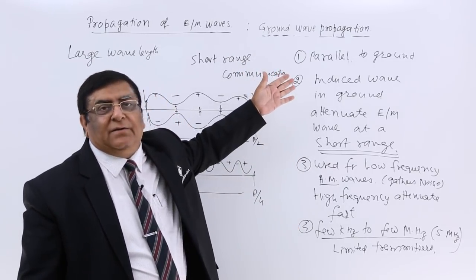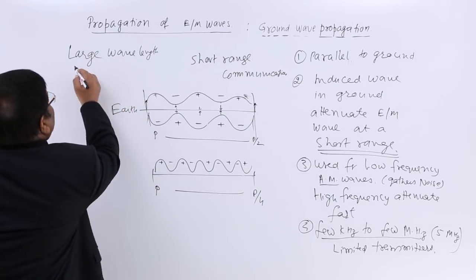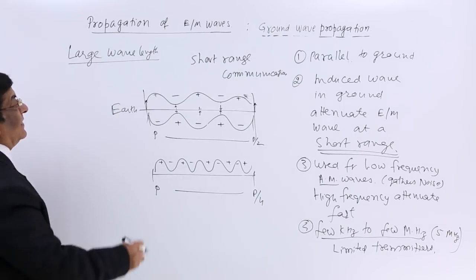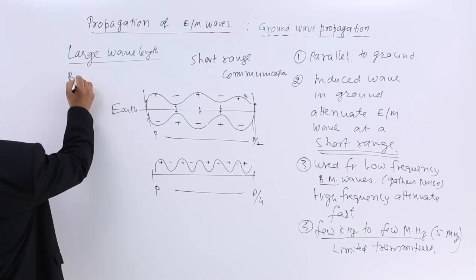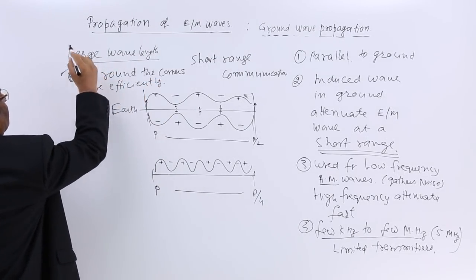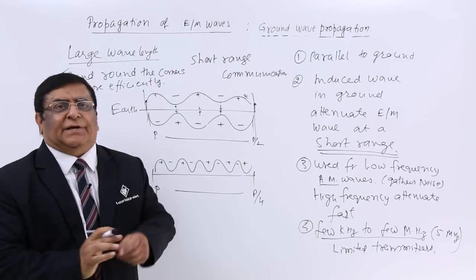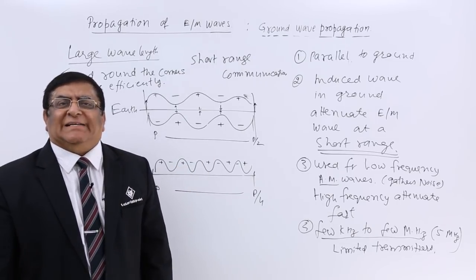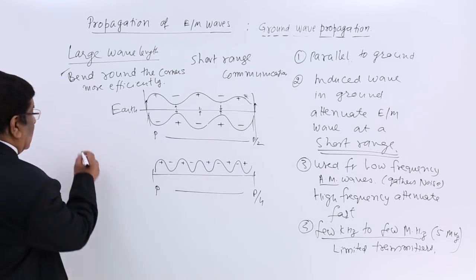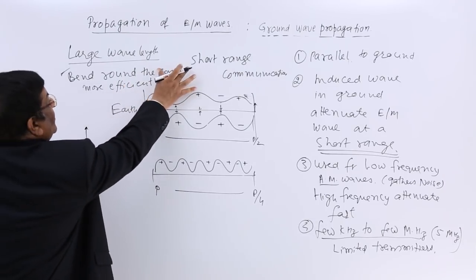All these disadvantages are there. But is there any advantage? Yes. The advantage is that it has a large wavelength, and when there is a large wavelength, the signal can bend round corners more efficiently and spreads very wide. We have studied interference and diffraction patterns.